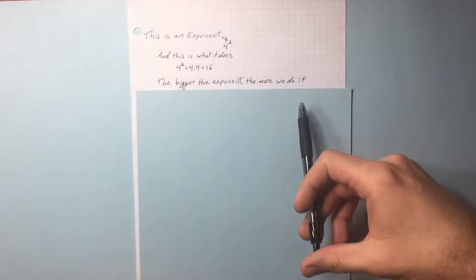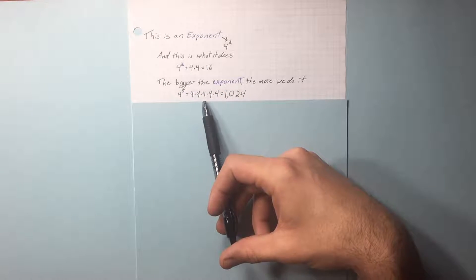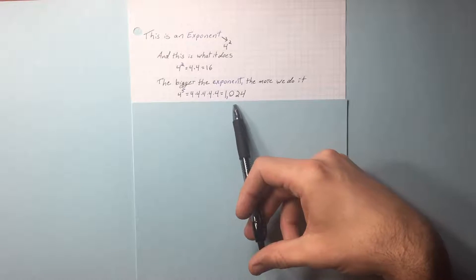The bigger the exponent, the more we do it. A base of 4 to the 5th, you times 4 by itself 5 times. Numbers get very big this way.